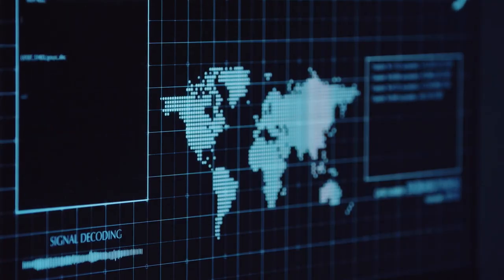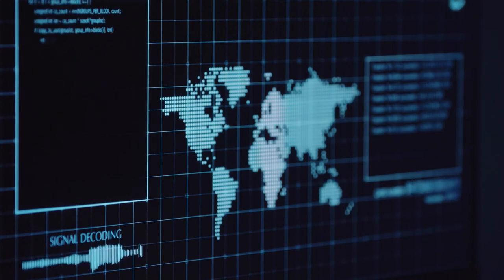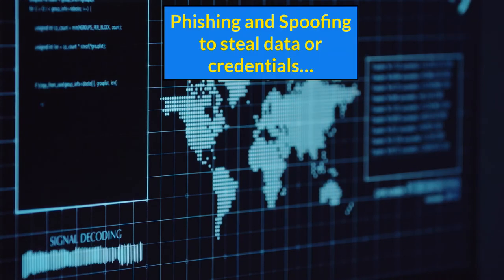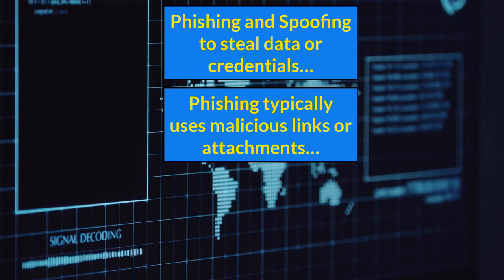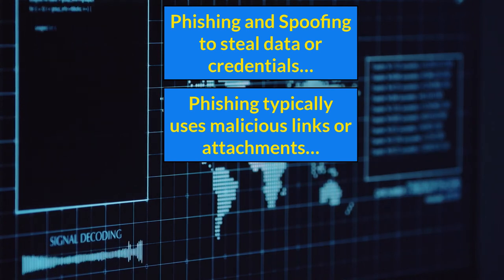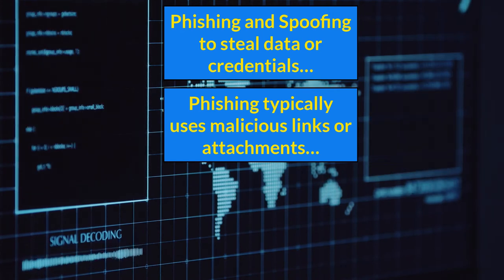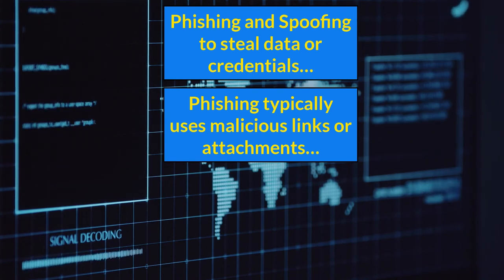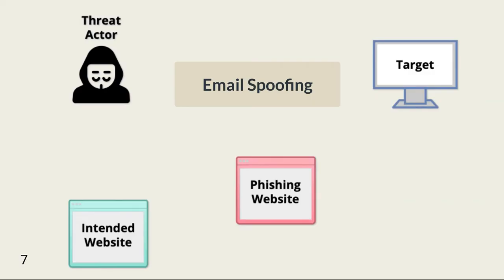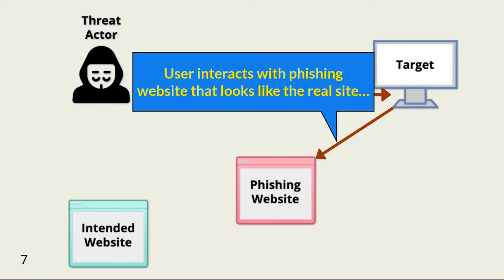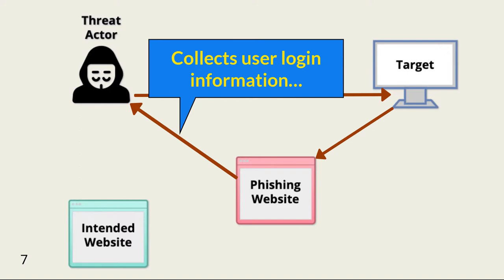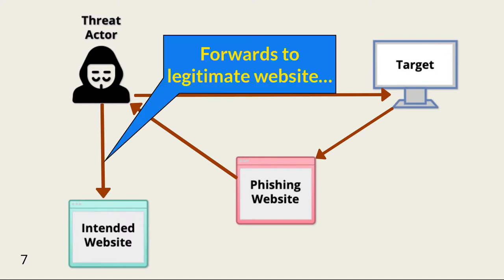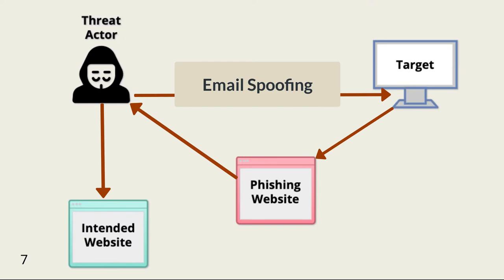Threat actors use phishing and spoofing campaigns to obtain authentication credentials for both email and business resources. Phishing attacks lure users into clicking on malicious links or opening infected attachments, which can result in redirection to a malicious server designed to collect the user's credentials. Spoofing attacks are a subset of phishing — a threat actor sends a message that looks like it's from a known organization or someone the user interacts with, including creating a source domain name that appears to be legitimate, with the goal of obtaining credentials or convincing the user to share files or data.